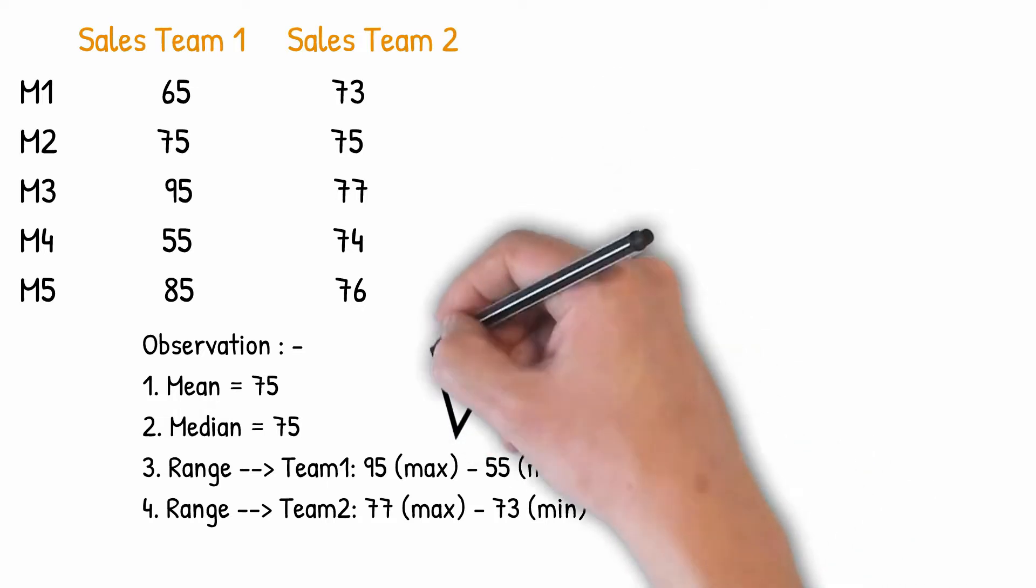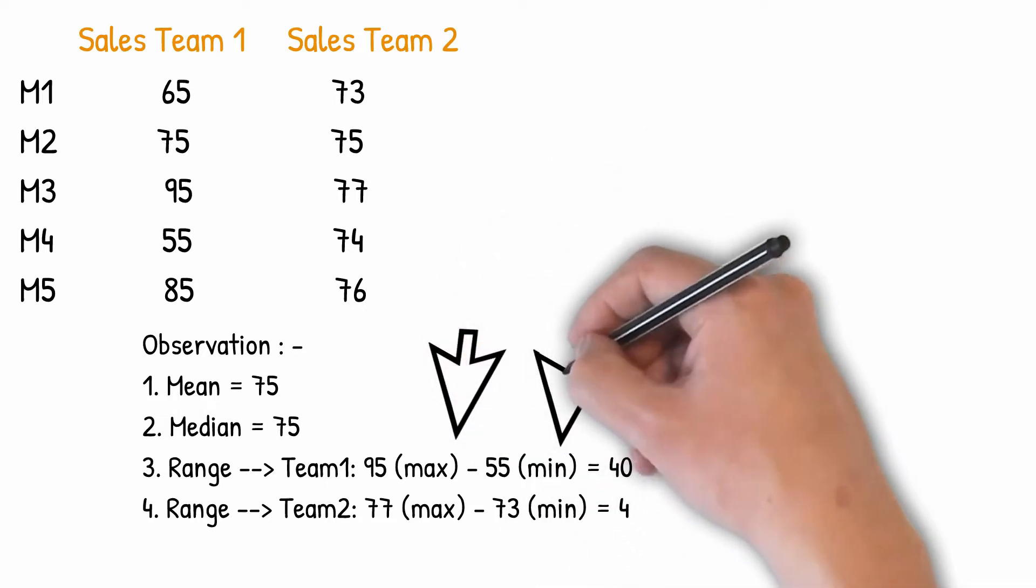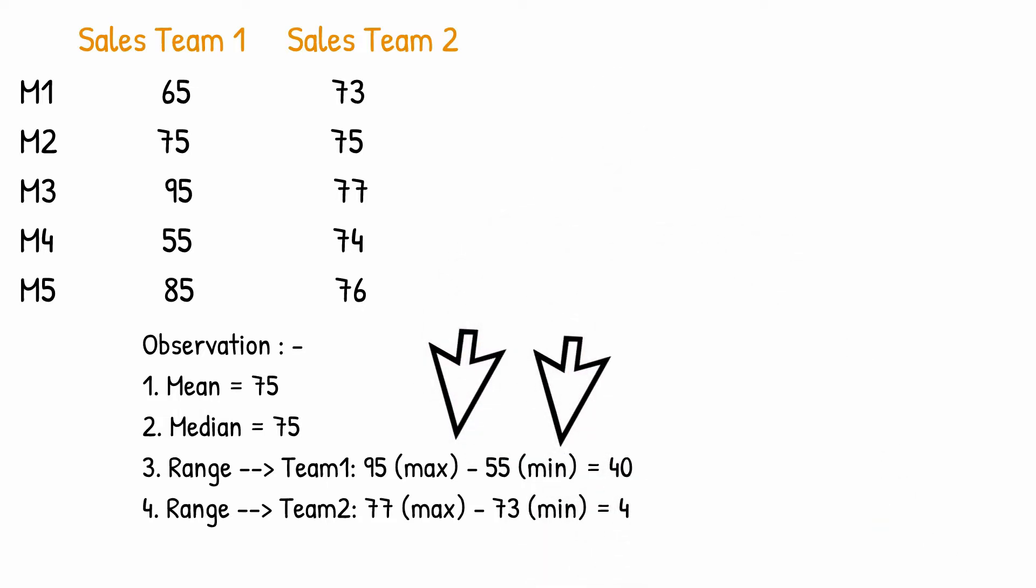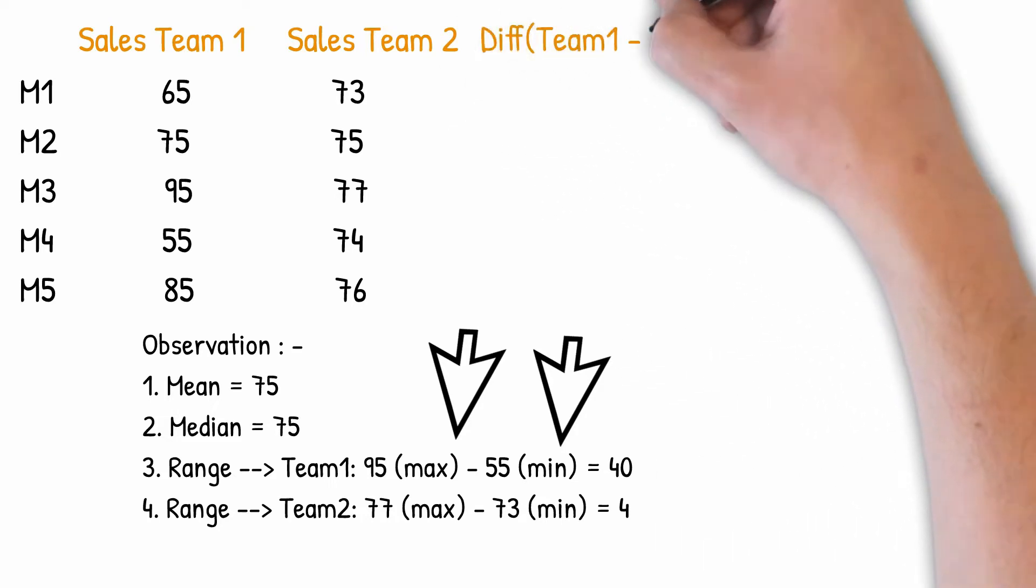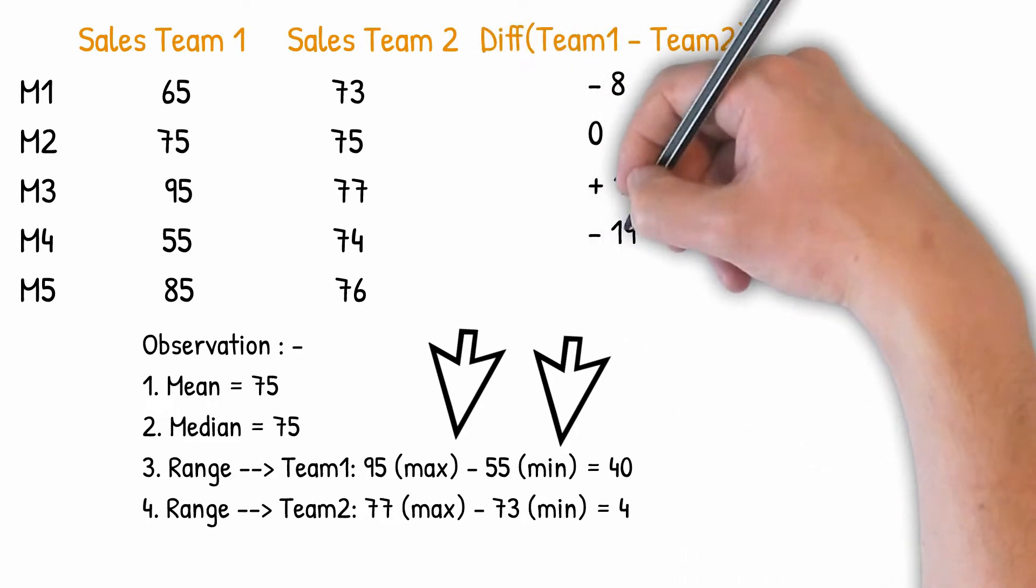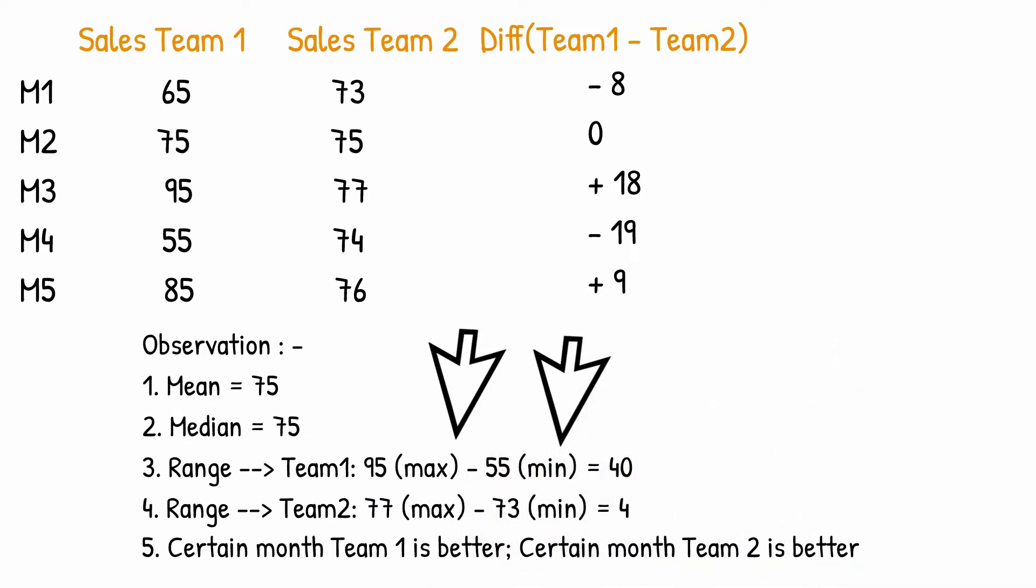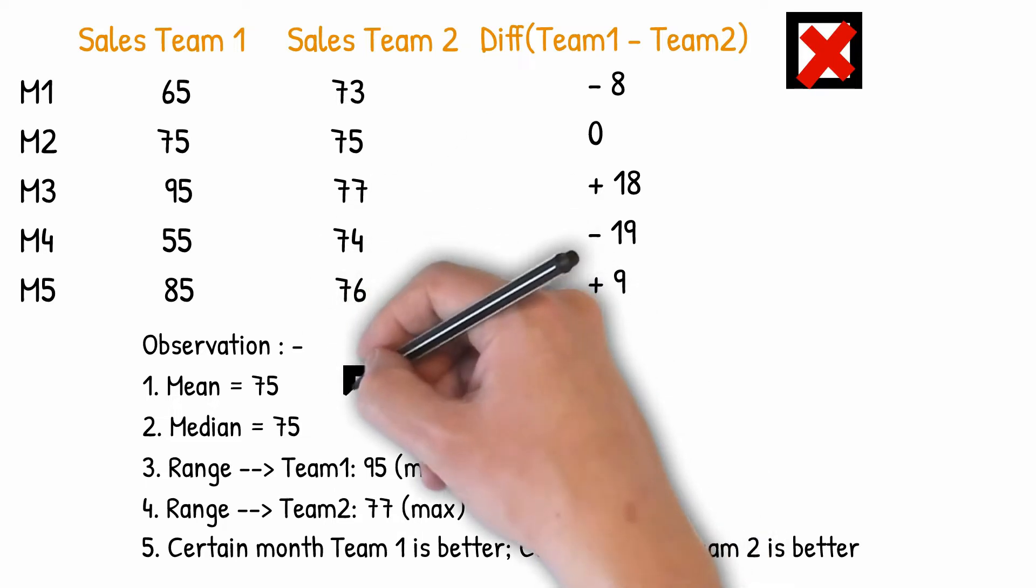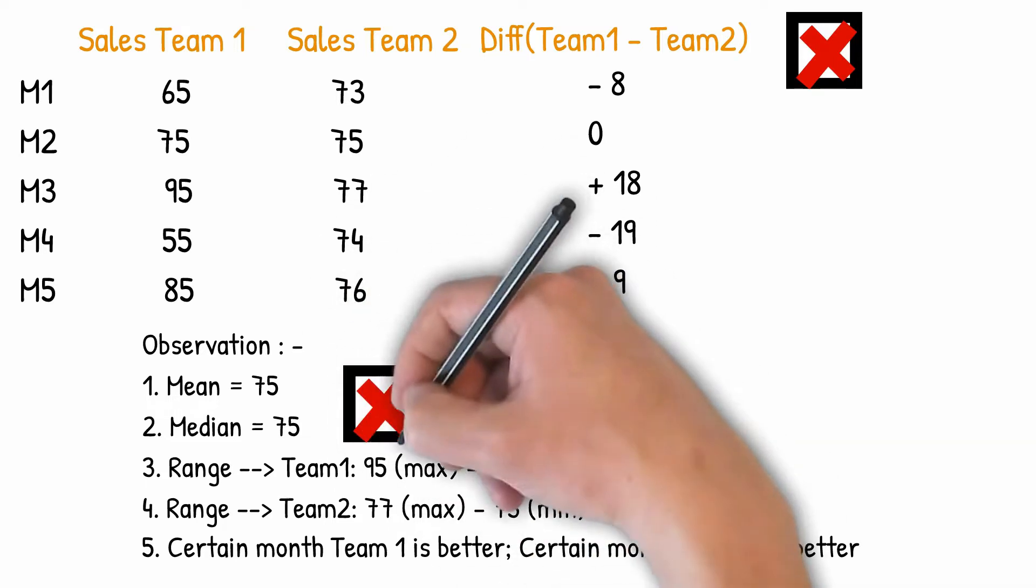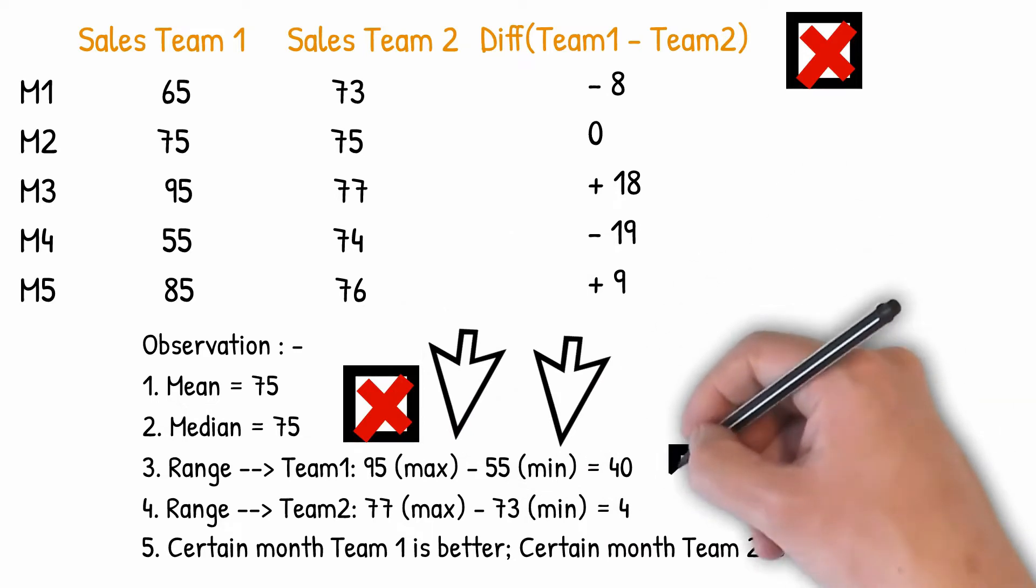However, the range considers only the extreme values of the data. In a comparative context, taking a difference between the sales figures we see that if in a month one team excels then in a subsequent month the other team excels equally, so we can't get a good feel of the performance. Now to compare both teams on performance we need to use something else since mean or median does not yield useful information.